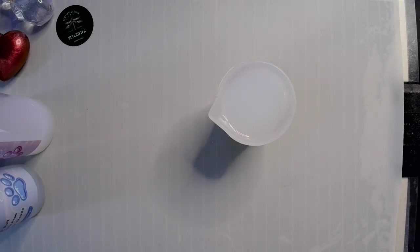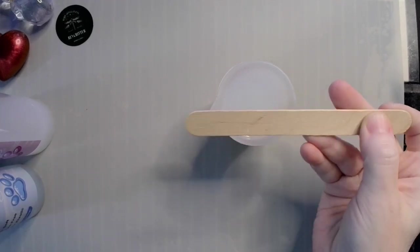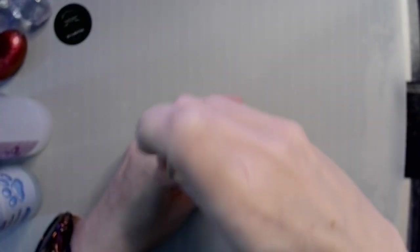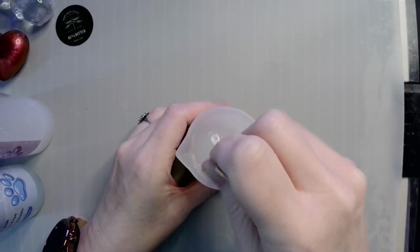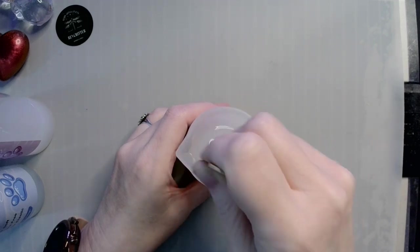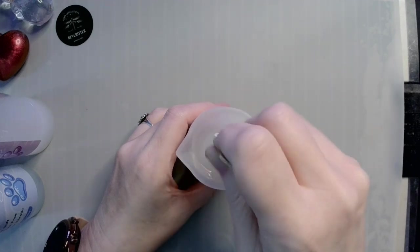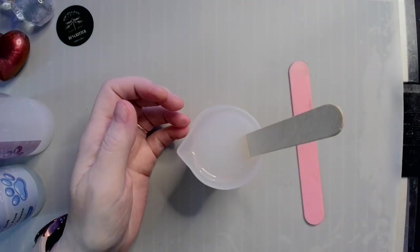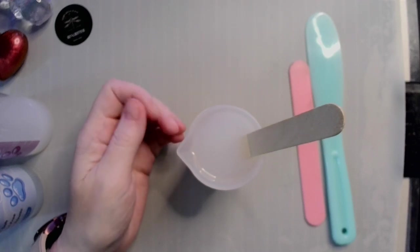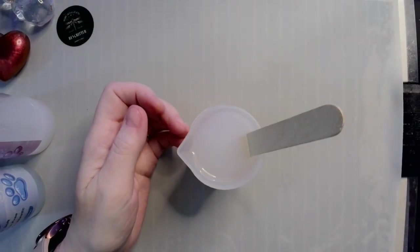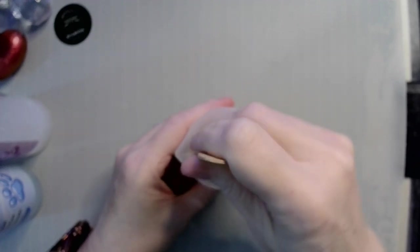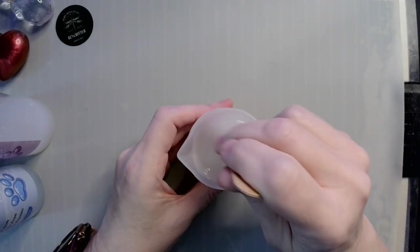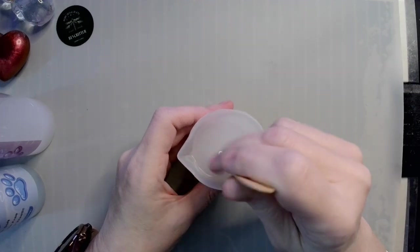So I have a disposable stirring stick that most people get when they get any resin delivered. Anything will do - silicone stirrer, a spoon, whatever you'd like to use. Stir it up. Manufacturer recommended stir time is three to four minutes, but I do want to say something while I'm stirring, so that's why I'm not fast forwarding.